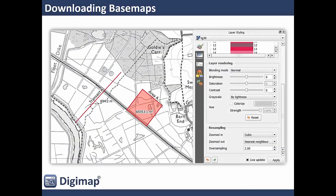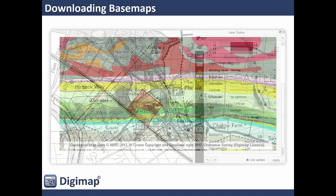In QGIS you can use the grayscale function — tick the grayscale by lightness box — and it takes the colors away, making the data you've added stand right out. When dealing with raster data, you can also change the zoomed-in resampling method from nearest neighbor to cubic in the resampling box on the right-hand side. This gets rid of the pixelated quality of zoomed-in raster data — instead of looking pixelated it looks slightly blurry, which takes the edge off the nasty effects particularly on text when you're just a little more zoomed in than the source scale.